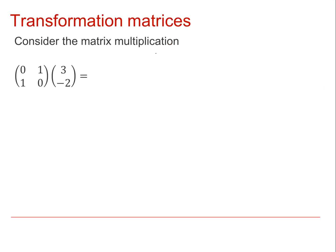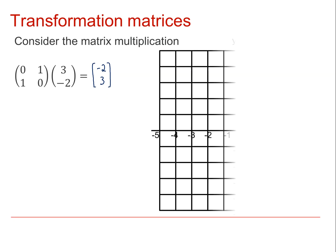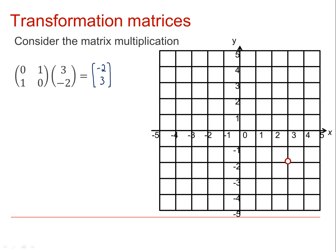We can use matrices to transform points. Look at this matrix multiplication. Carrying it out, I get minus 2, 3. So we can say that the point 3 minus 2 has been transformed by this matrix to the point minus 2, 3.